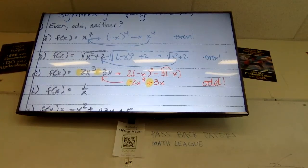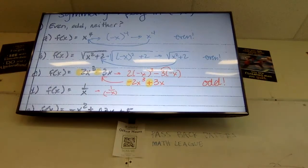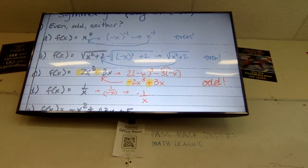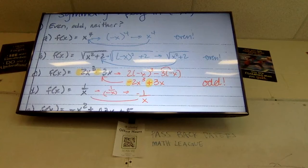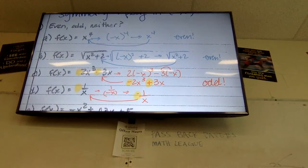Next one says 1 over x. So I get 1 over negative x. I can make that negative 1 over x. Is that the exact same as what we had before? Nope. Is it the exact opposite? Yes — it was positive, now it's negative. So it's going to be odd.